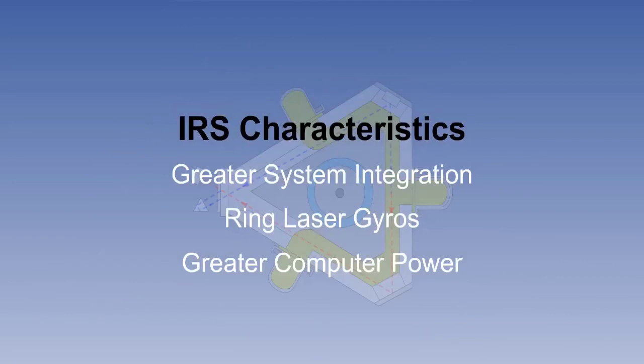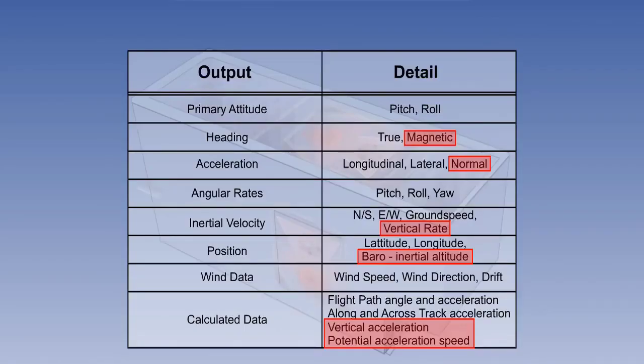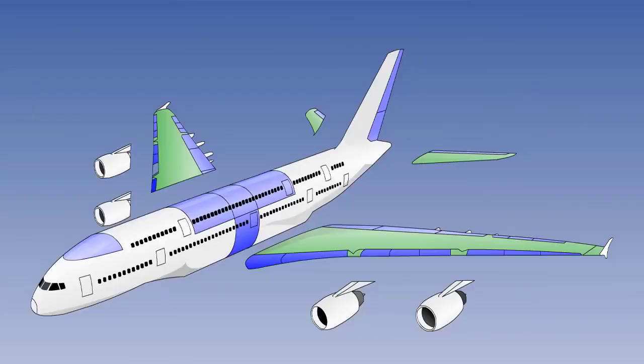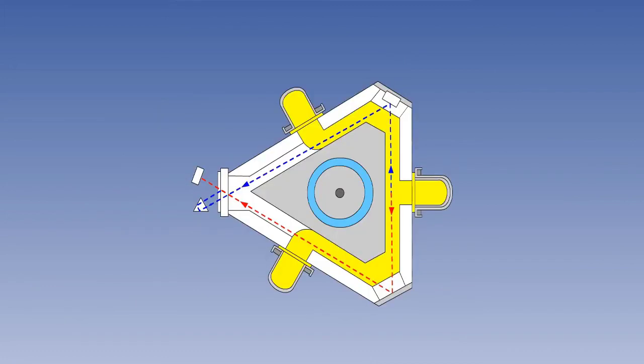Let's summarize what we've covered so far. There are three main characteristics which make an IRS recognizably different from a first-generation standalone INS. These are greater system integration, the use of ring laser gyros, and much greater computer power. The outputs of the IRS are broadly similar to those of the older INS, but with the addition of a vertical channel and a magnetic database. Modern aircraft are designed with the IRS at the heart of an integrated avionics system, which avoids duplication of sensors such as auxiliary gyros and other less-accurate data sources. The next lesson will go on to consider the ring laser gyro.